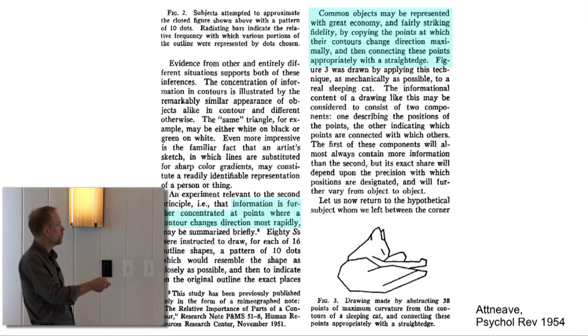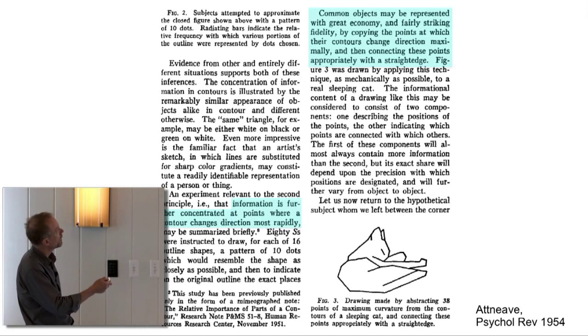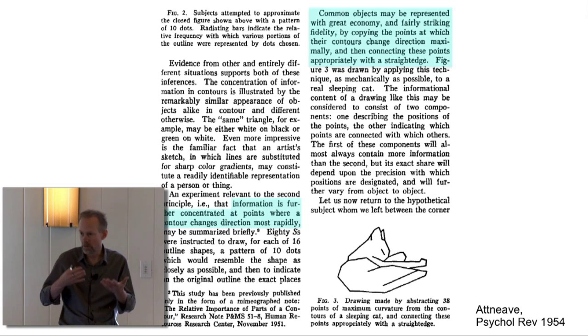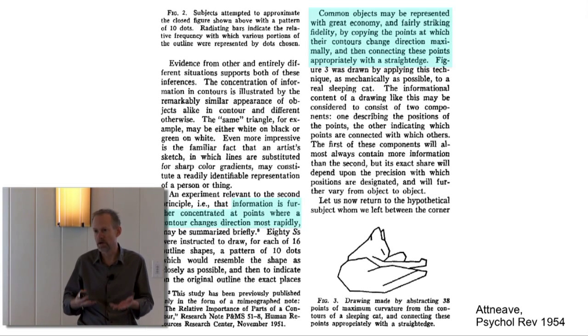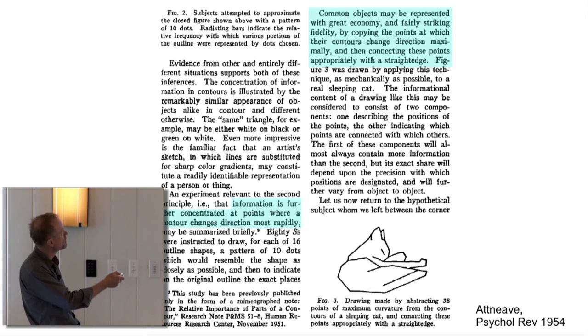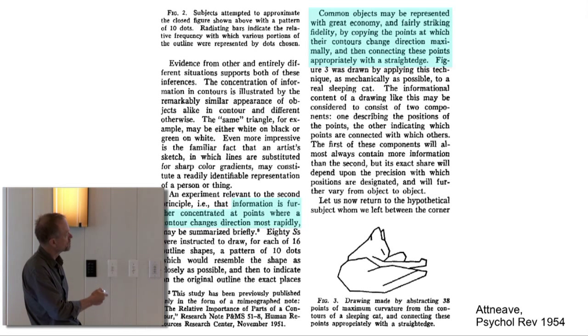How does this relate to one of the goals of transformation, that is compression? There's an idea that goes way back, at least to Fred Attneave's famous 1954 psychological review article, that regions of higher curvature are the regions of shapes that carry the most information. Here's an important quote: information is concentrated at points where a contour changes direction most rapidly, that is, fastest change in orientation, that is, highest curvature. And he also said common objects may be represented with great economy, in a compressed, sparse, more efficient fashion, and with fairly striking fidelity by copying the points of maximal direction change and connecting them with a straight edge.